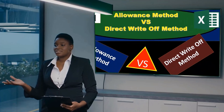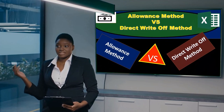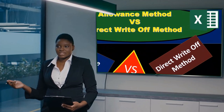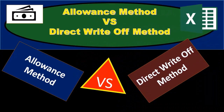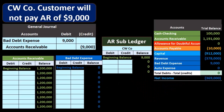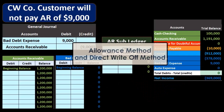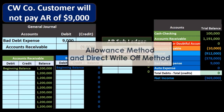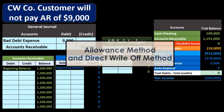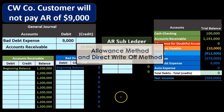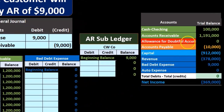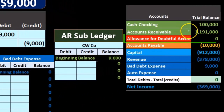In this presentation we will take a look at a comparison between the allowance method and the direct write-off method. When considering both methods, we are considering the accounts receivable account.